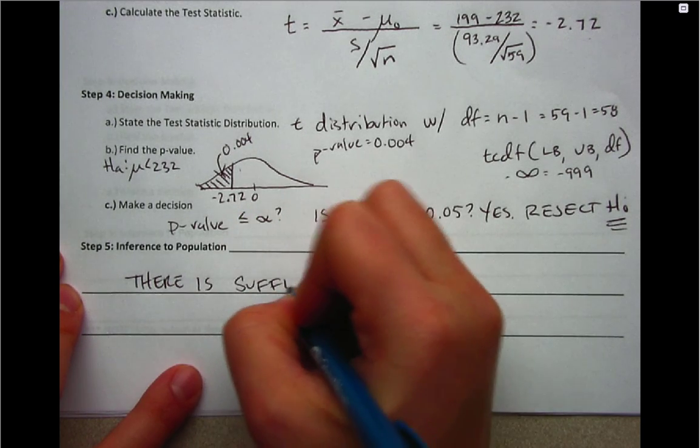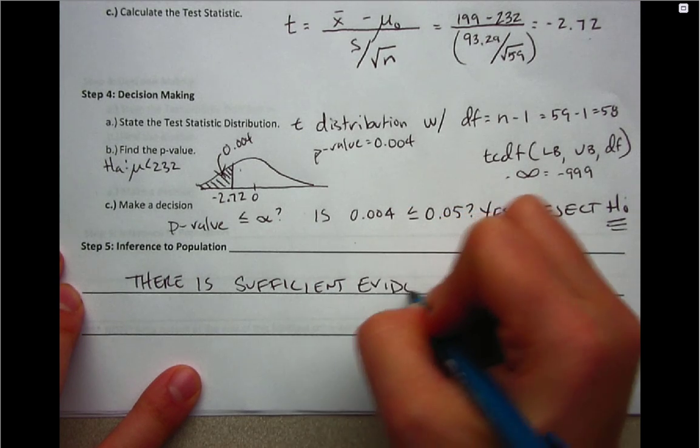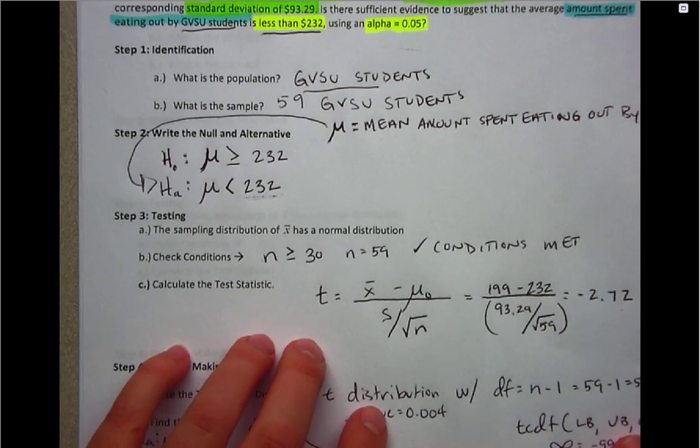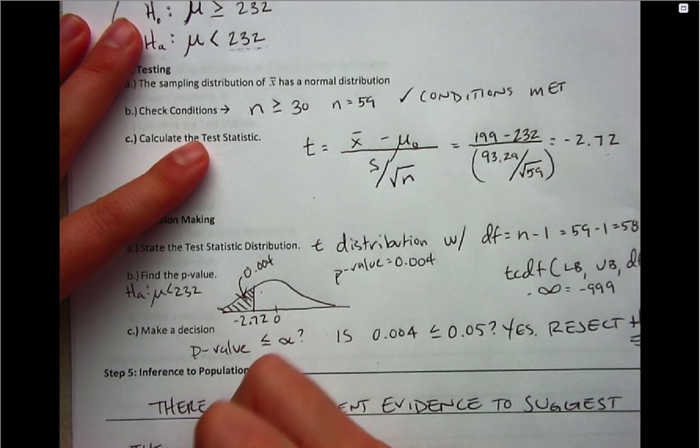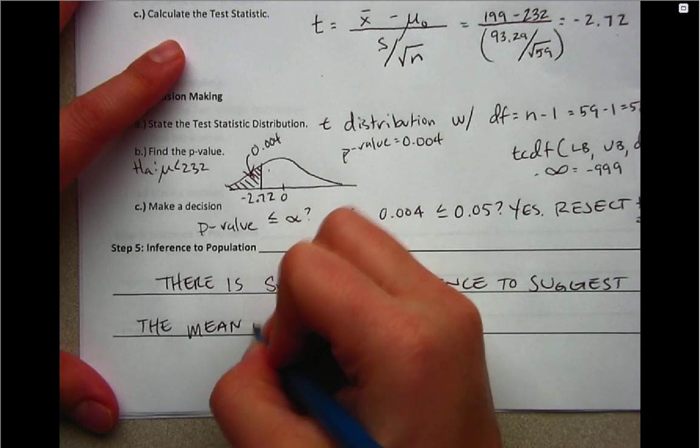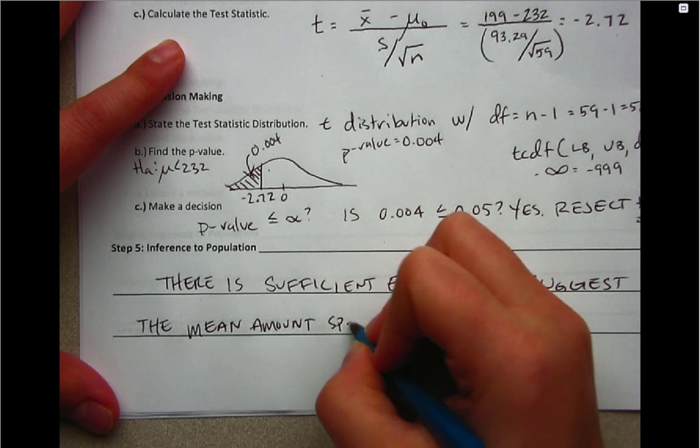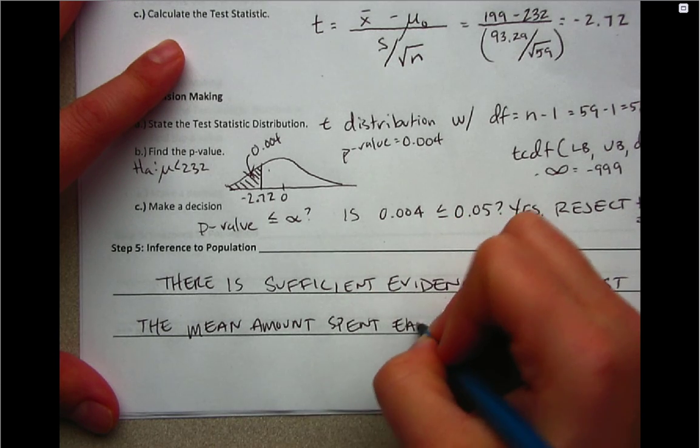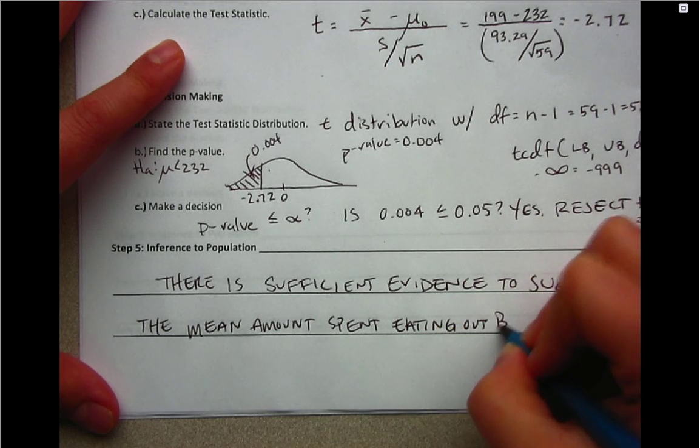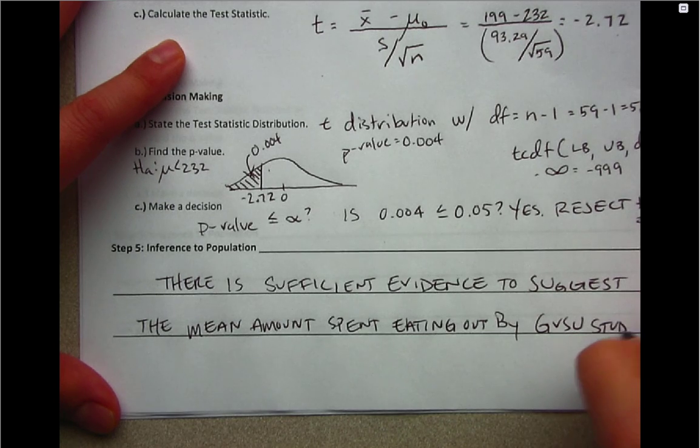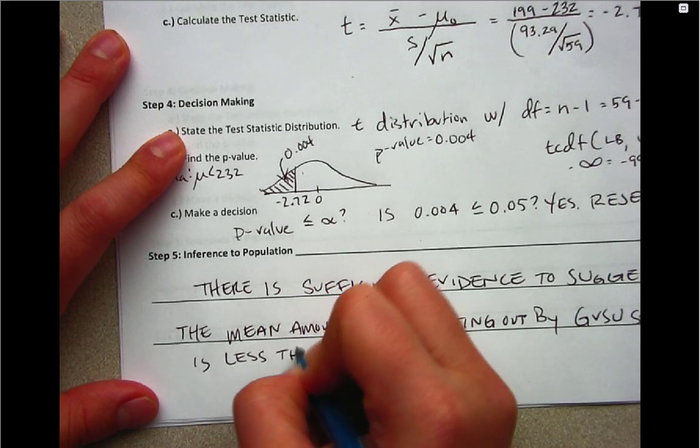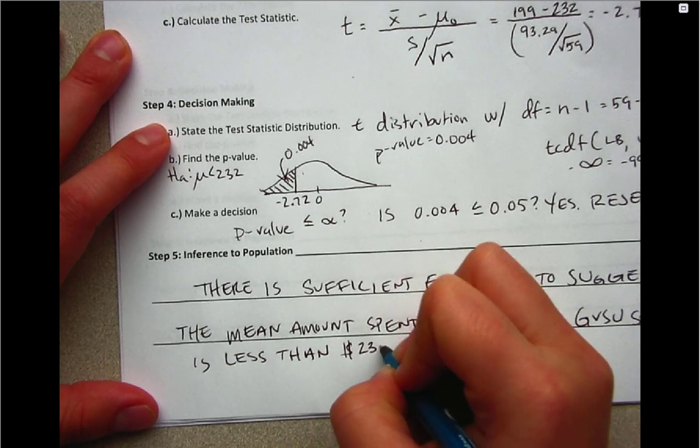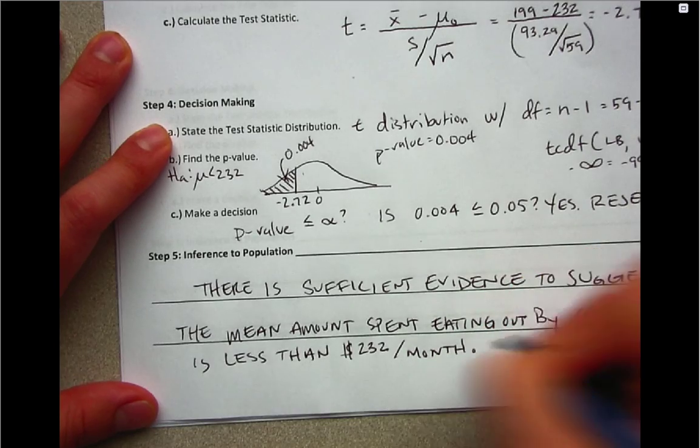Because you reject the null, the statement will be at the start of step five: there is sufficient evidence. Then we're going to restate our alternative in its word format. There's sufficient evidence to suggest that the mean amount spent eating out by GVSU students is less than—and we'll put units in now—$232 per month.